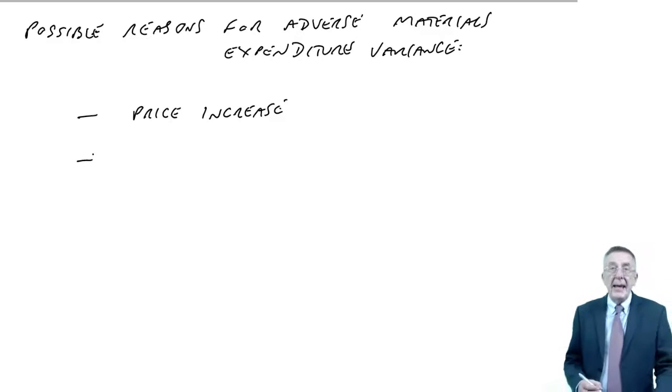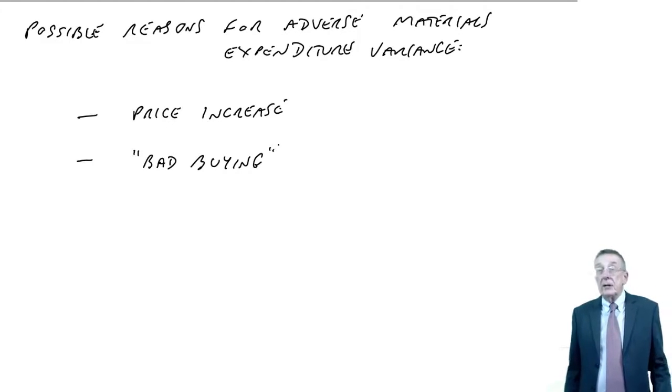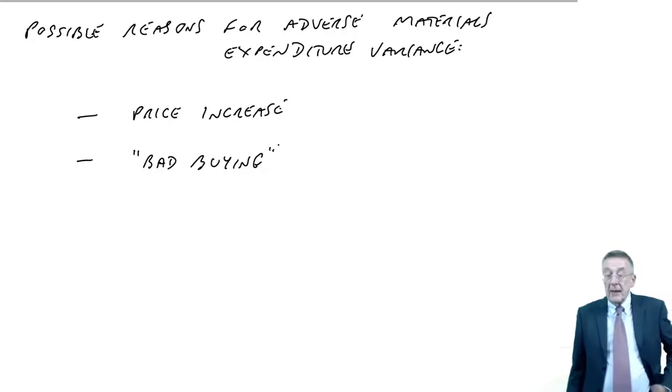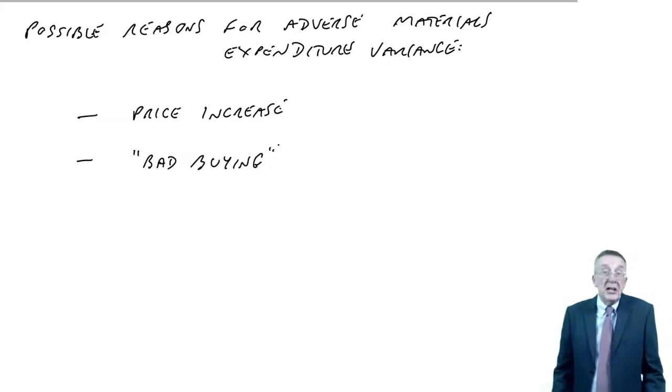However, it may not have been that. Maybe the price hasn't gone up at all and should still be 450 a kilo. But maybe whoever's responsible, the purchasing manager, has perhaps done a bad job. I call it bad buying. Maybe we could obtain the material at 450, but the purchasing manager has simply gone to the wrong supplier and ended up paying more. Or maybe we budgeted on 450 assuming we got discounts, and the purchasing manager didn't fight for the discounts and ended up paying more. The purchasing manager either we should replace or we should teach them how to buy better.